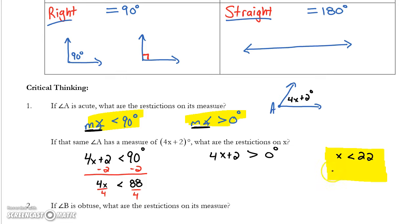But that's not the only restriction. I have a restriction on x on the other side as well. If I subtract 2 from both sides, 4x must be greater than negative 2, and divide both sides by 4, I'm saying that this x must also be greater than negative 1 half. If you want to write it as a compound inequality, it would look like this. x must be greater than negative 1 half less than 22.